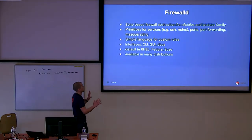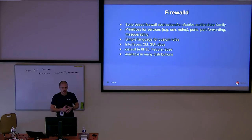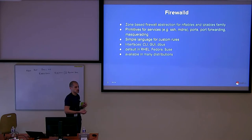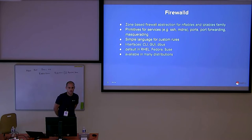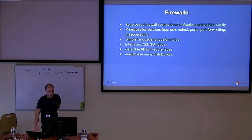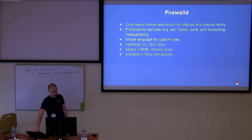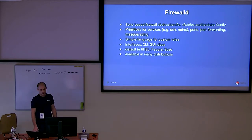A quick overview of FirewallD, just to make sure everybody's on the same page. FirewallD is a zone-based firewall abstraction for NFTables and IPTables. It provides parameters like services and ports, and also adds network-level things like port forwarding and masquerading. It also contains a simple language for custom rules for more advanced use cases. There are two main interfaces: a CLI and a GTK GUI. It also has a D-Bus interface for programmatic access, and both user interfaces use the D-Bus interface. It is the default firewall for RHEL, Fedora, and SUSE, and it's available in many other distributions.